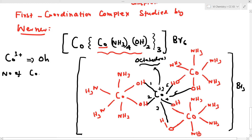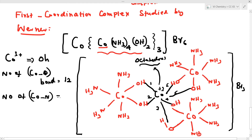The number of Co-O bonds is 12 and the number of Co-N bonds is also 12, giving a total of 12 bonds in this first coordination complex studied by Werner. This is very important as it starts the study of coordination complex geometry.